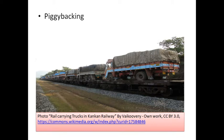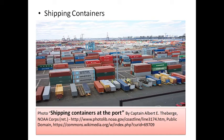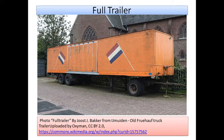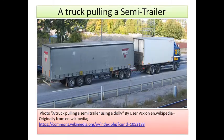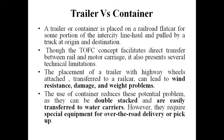In the picture, this is called piggybacking — trucks with load are carried by a flat car of a train. These are containers in a shipping port. A trailer is almost like the container but has wheels. This picture shows a truck pulling a semi-trailer; a trailer or container is placed on a railroad flat car for some portion of the intercity line haul, and pulled by a truck at origin and destination.